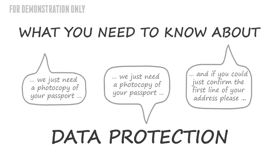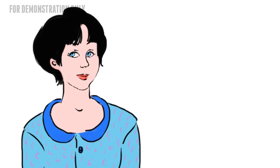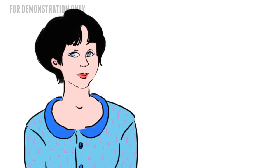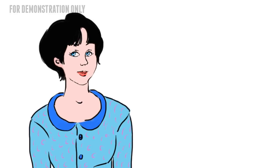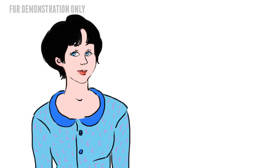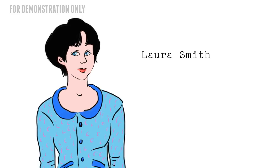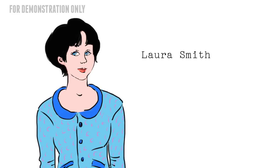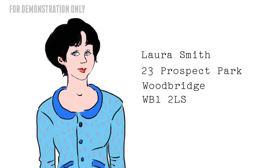Before we look at the data protection principles and how we're protected, let's cover some basics about what personal data is and what data processing means. First off, meet Laura. In order for data to be personal data, it needs to be able to identify a living individual. So Laura's name by itself wouldn't be enough to identify her, but her name with her address would.